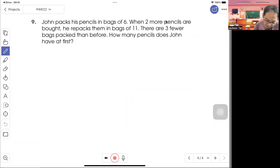So let's check out question 9. John packed his pencils in bags of 6. When two more pencils are packed, he packed them in bags of 11 and there are three fewer bags packed than before. So there are a few ways, of course we can do listing.